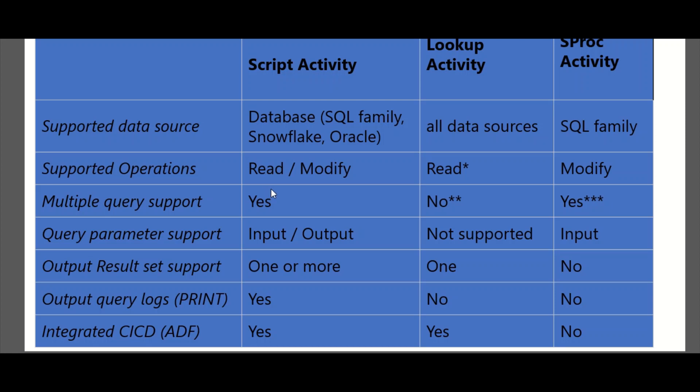For query parameter support: Script Activity supports both input and output parameters; Lookup has no direct parameter support though you can create dynamic queries as a workaround; Stored Procedure supports only input parameters — no output parameter support. So if you have a procedure that returns an output value you want to reuse, Script Activity is useful. For output result set support: Script Activity supports multiple result sets from multiple select operations; Lookup only returns one result set; Stored Procedure returns an output query log.